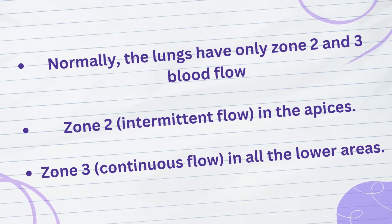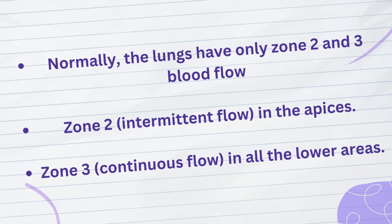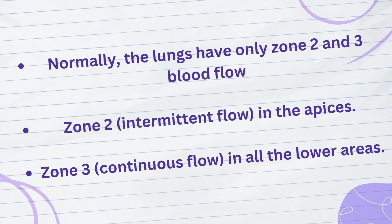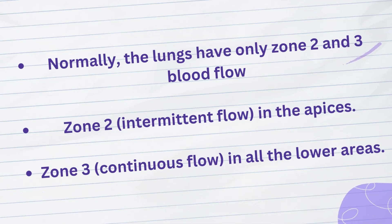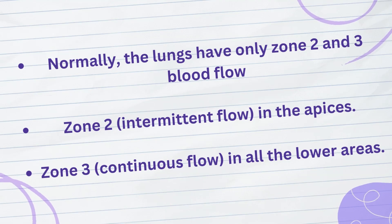Also, when a person is lying down, no part of the lung is more than a few centimeters above the level of the heart. In this case, blood flow in a normal person is entirely zone 3 blood flow, including the lung apices.